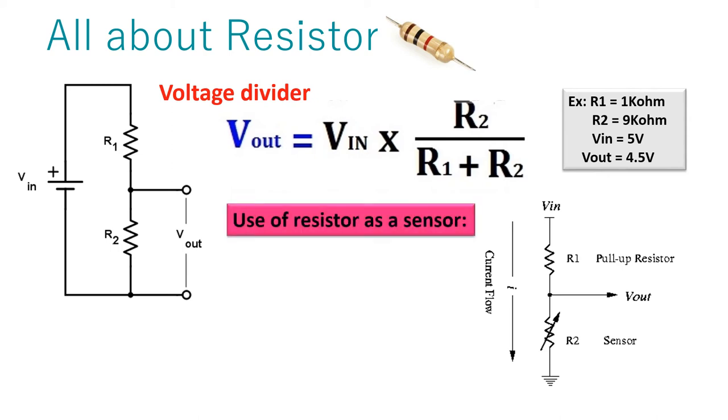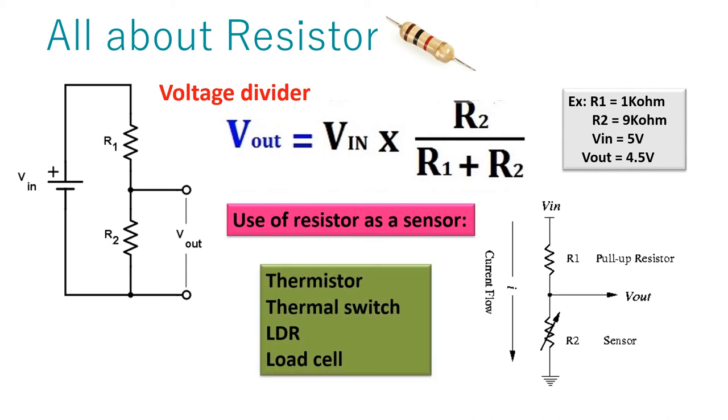There are many types of sensors whose internal resistor value depends upon the environmental conditions, such as the value of a thermistor varies with temperature. If we use a thermistor in place of R2, then the value of the output voltage will change along with the value of the temperature. This principle is used in a digital thermometer to measure the value of temperature.